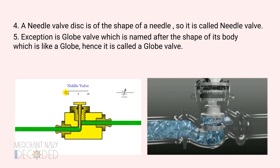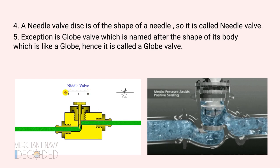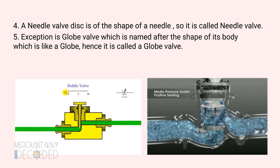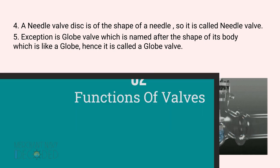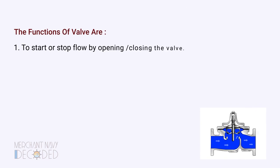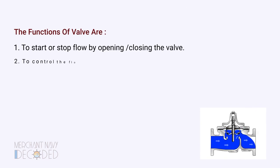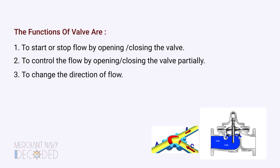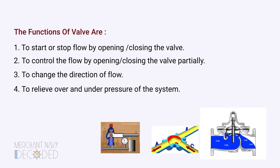An exception is a globe valve, which is named after the shape of its body, which is like a globe, hence it is called a globe valve. The functions of the valve are: to start or stop flow by opening or closing the valve, to control the flow by opening or closing the valve partially, to change the direction of flow, and to relieve over and under pressure of the system.